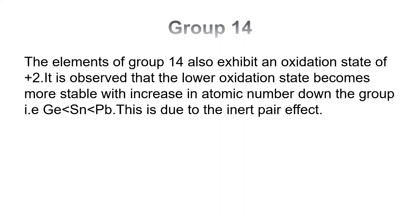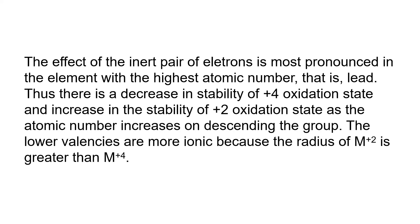The elements of group 14 also exhibit an oxidation state of +2. It is observed that the lower oxidation state becomes more stable with increase in atomic number. The effect of the inert pair of electrons is most pronounced in the element with the highest atomic number, i.e., lead. Thus, there is a decrease in stability of the +4 oxidation state and an increase in stability of the +2 oxidation state as the atomic number increases on descending the group. The lower valences are more ionic because the radius of M²⁺ ion is greater than M⁴⁺ ion.